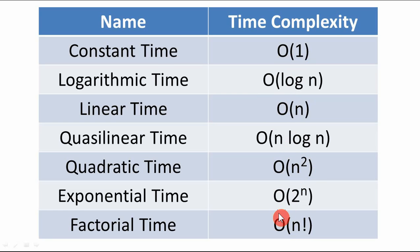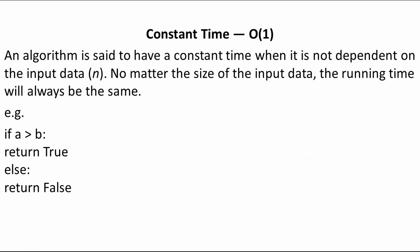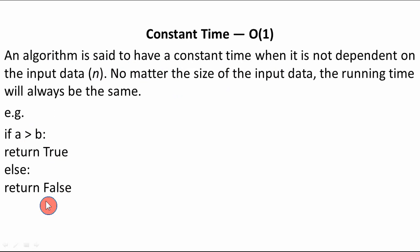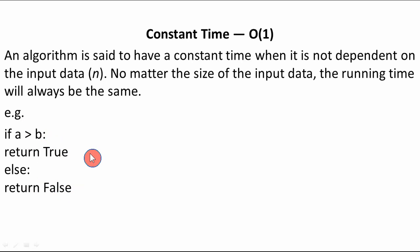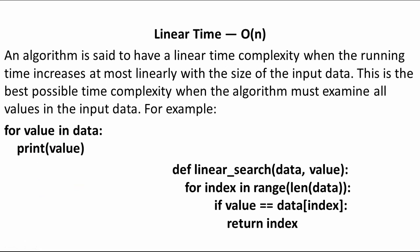Let's understand 2 or 3 important time complexities with examples. First, constant time O(1): an algorithm has constant time when it is not dependent on the input value. No matter the size of the input data, the running time will always be the same. For example, a statement that returns either true or false — only one statement executes — giving it constant time complexity O(1).